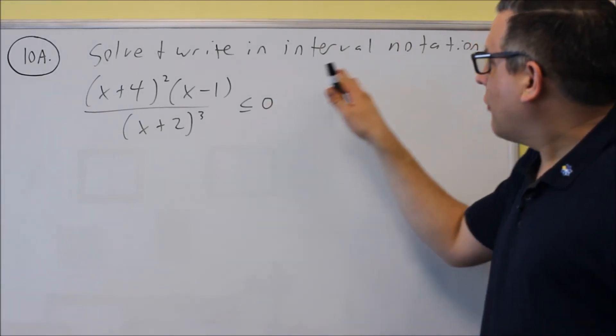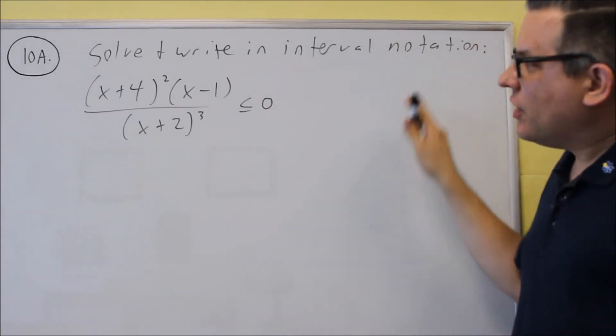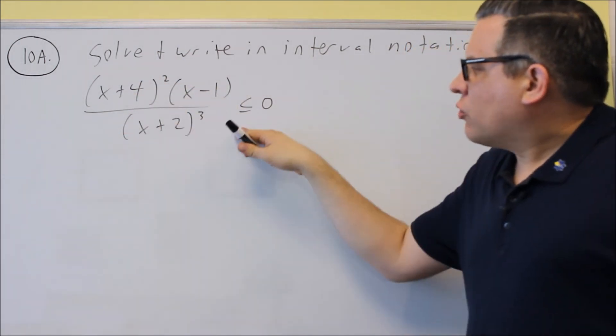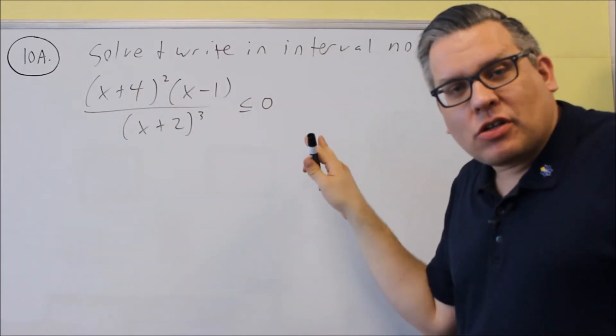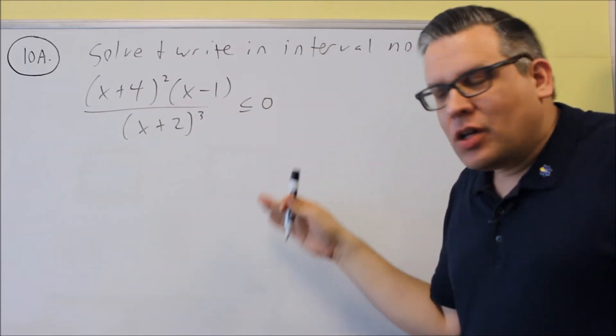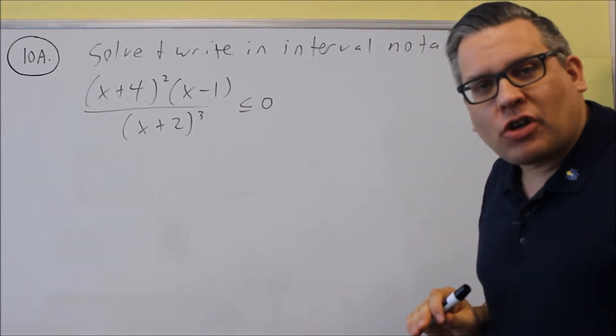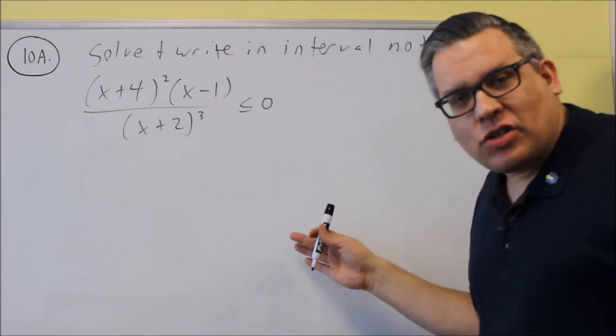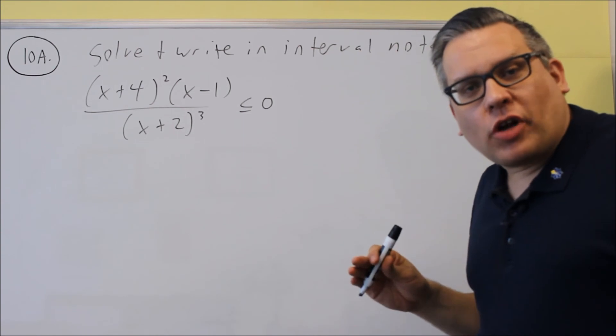Okay, for these problems that have solve and write interval notation, you might see a problem like this where it's being divided or you might see some things being multiplied together. There's two different ways that you can do these kind of problems. The first way is making a table and the other way is the number line method.